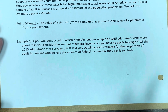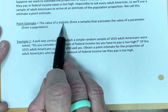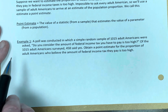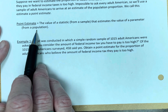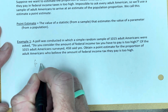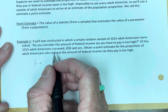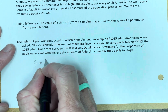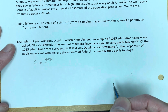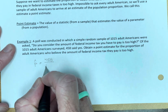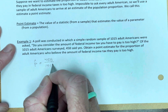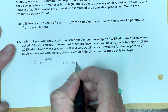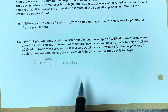The point estimate is going to be the proportion from the sample, and we'll use that to estimate the population's proportion. P-hat, the sample proportion, is equal to the number of individuals in the sample who said yes — that's 458 — divided by the total sample size, which is 1,015. Putting that into a calculator and going out to three decimal places, the proportion who said yes was 0.451.